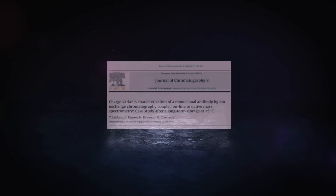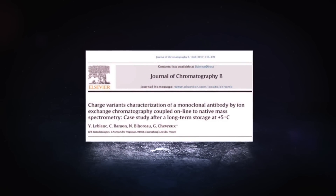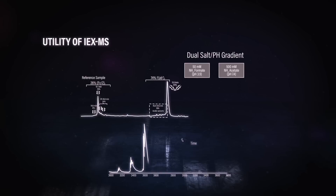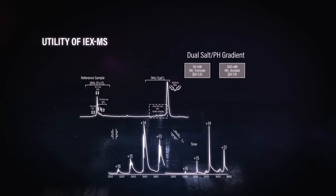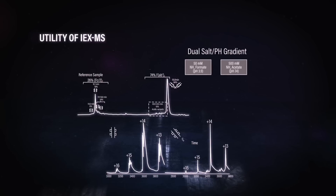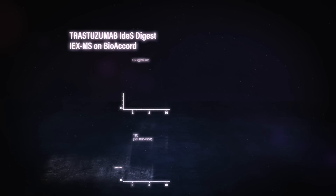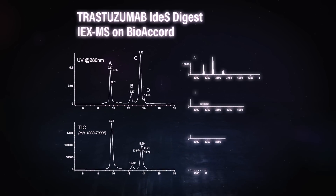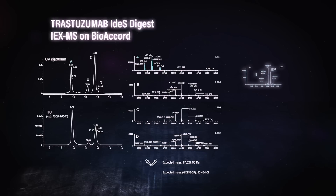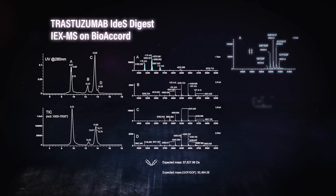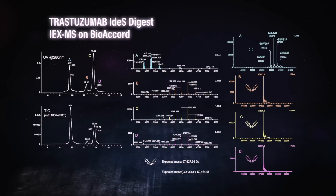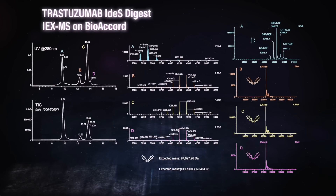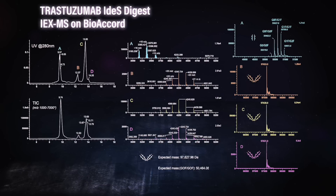On the next slide, there's been some things in the literature about native mass spec. This particular one shows that you can use a salt and pH gradient to couple ion exchange to a mass spec. This one is from an IDES digest where you have the Fc portion and the Fab portion with very nice resolution. On this slide we have that same trastuzumab IDES digest — peaks A through D are very well resolved with great MS data. Peak A is your Fc portion with all the different N-glycoforms resolved, and peaks B, C, and D are related to the Fab portion. Peak B is probably some deamidation with your trastuzumab — very well known. It's obvious we need this kind of separation with chromatography attached to mass spec, otherwise you wouldn't get that from reverse phase.